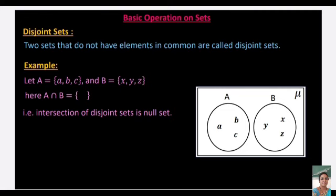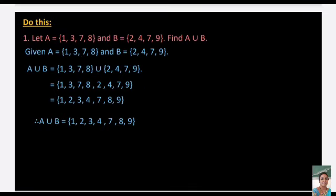Disjoint sets: Two sets that do not have any elements in common are called disjoint sets. For example, if A = {a, b, c} and B = {x, y, z}, there are no common elements, so A ∩ B = φ. When the intersection of two sets is the null set, the sets are called disjoint sets, and their circles do not overlap in the Venn diagram.